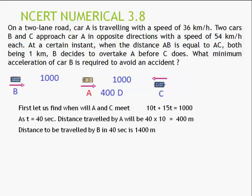B needs to travel 1400 meters in 40 seconds. Solving the equation gives approximately 1 m/s² for B's acceleration. Now if we want to do this using relative velocity concept: take C as the station (reference). B's velocity relative to C: V_BC = V_B − V_C. V_AC = 15 + 10 = 25 m/s (opposite directions). V_AB = 15 + 15 = 30 m/s (both on same side). We work on the concept and equation.